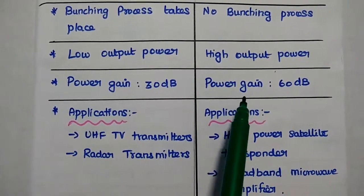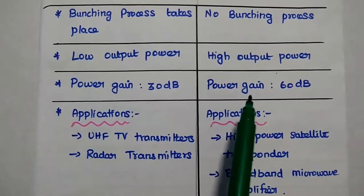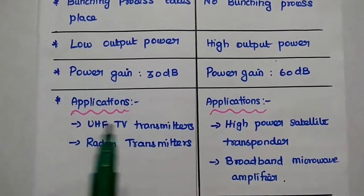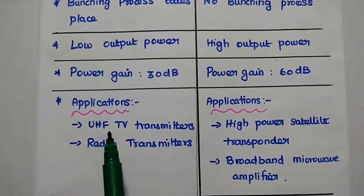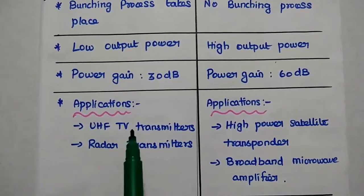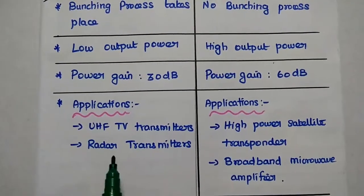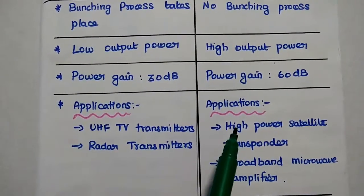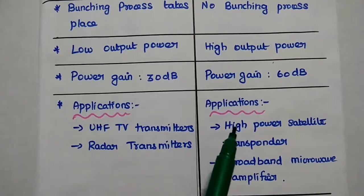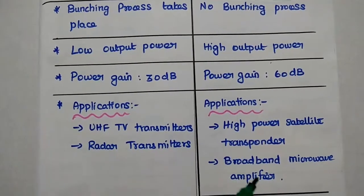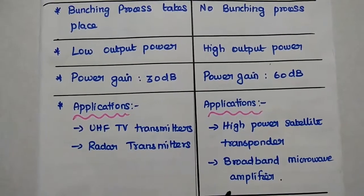It is a high gain and high power microwave amplifier. The major applications of this two cavity klystron amplifier are UHF, that means ultra high frequency TV transmitters, radar transmitters. For this TWTA, the applications are high power satellite transponder, broadband microwave amplifier, radar transmitter.